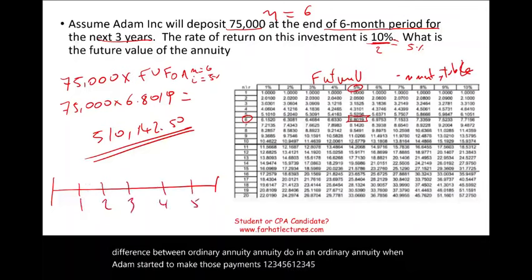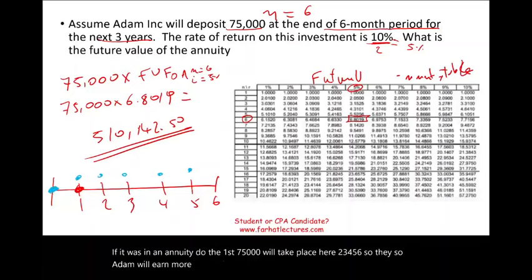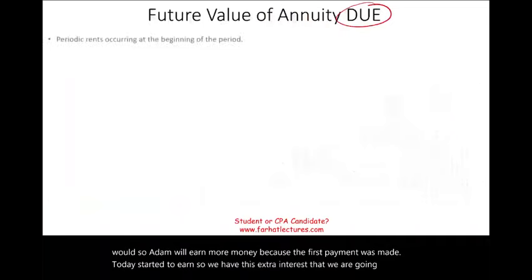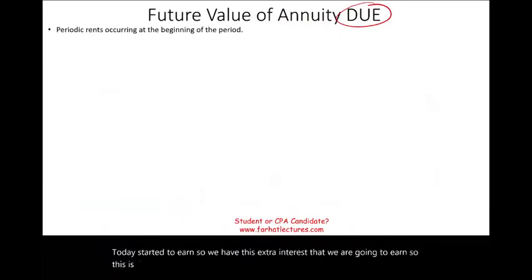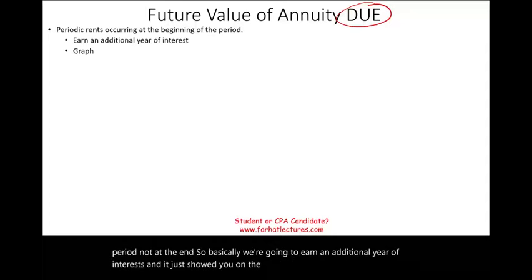If it was an annuity due, the first $75,000 would take place today — starting now — so Adam will earn more money because the first payment was made today and started to earn interest immediately. We have this extra interest that we are going to earn. This is the annuity due: the periodic rent occurring at the beginning of the period, not at the end. Basically, we earn an additional period of interest.